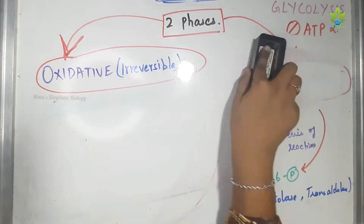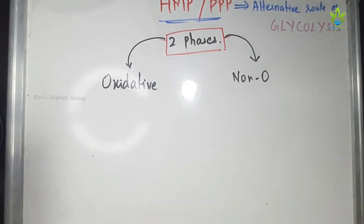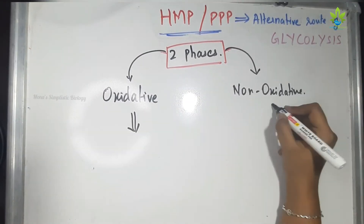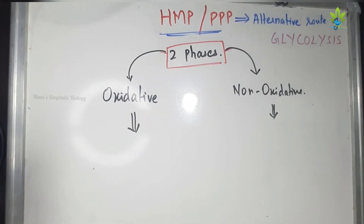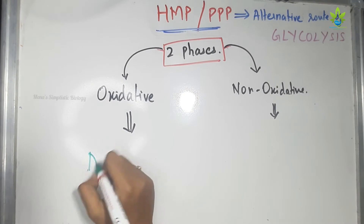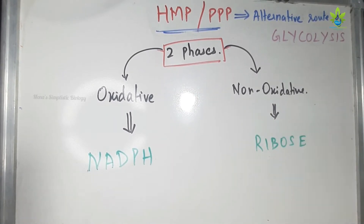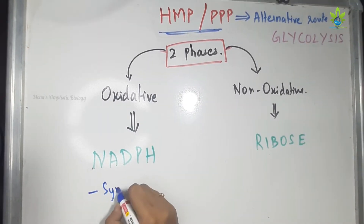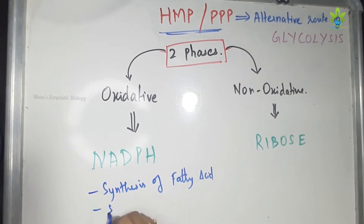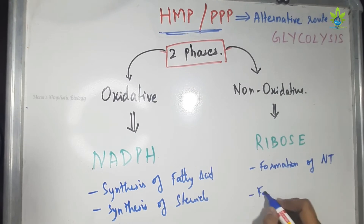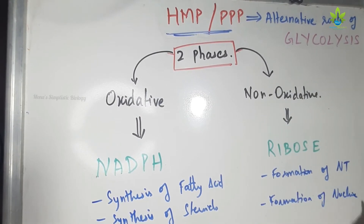So the main products are: NADPH is produced in the oxidative phase, and ribose is produced in the non-oxidative phase. NADPH is used for synthesis of fatty acids and steroids, and ribose is used for the formation of nucleotides and nucleic acids.